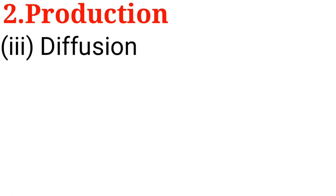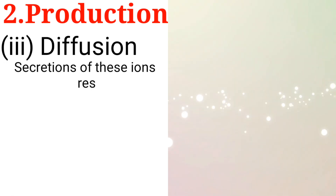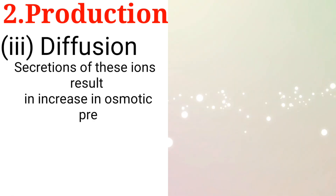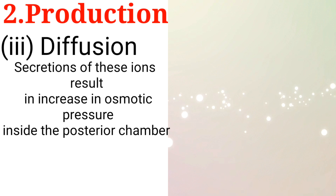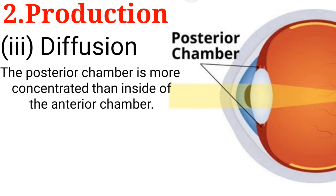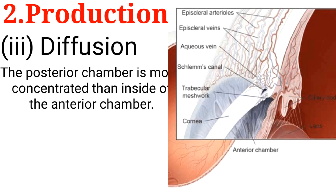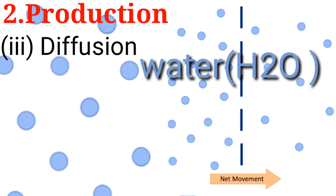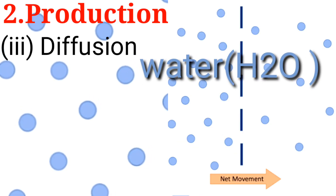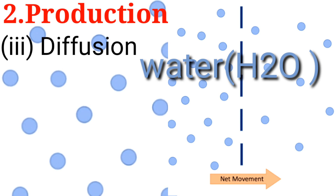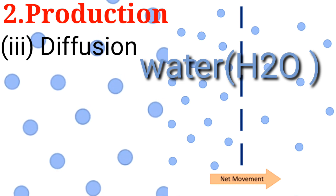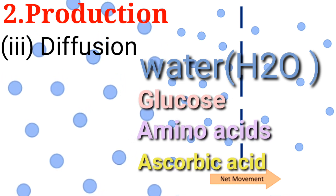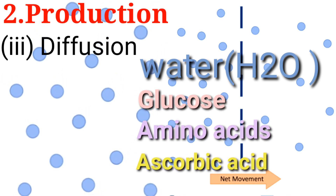Diffusion. Secretion of these ions results in an increase in osmotic pressure inside the posterior chamber. Thus, the posterior chamber is more concentrated than the inside of the ciliary process. Therefore, water migrates from the capillary to the posterior chamber along with other substances like glucose, amino acids, and ascorbic acids.